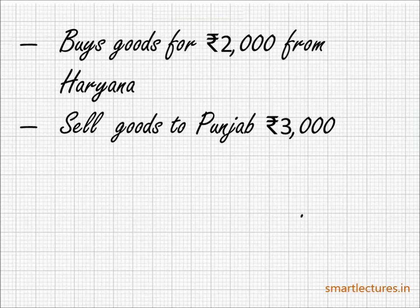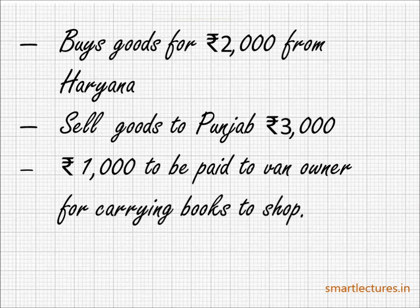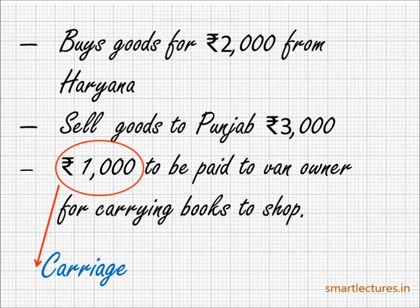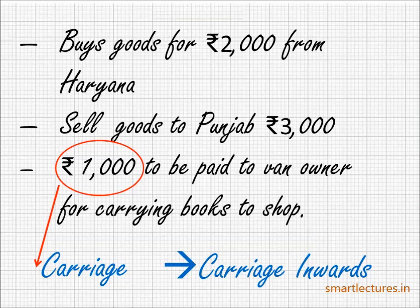Naturally, you are buying the goods at a lower price and selling the goods at a higher price. So when you buy the goods from Haryana, you have to arrange some vehicle — truck, tempo, or something that can carry your books from Haryana to Delhi. Suppose you agree to pay Rs. 1000 to the owner of the van who brings the books from the publisher in Haryana to your shop in Delhi. That expense of Rs. 1000 will be called Carries, and this is Carries Inward.